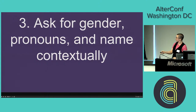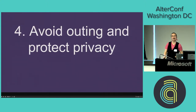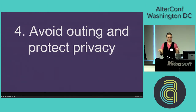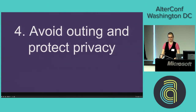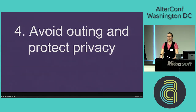That brings me to step four: avoid outing and protect privacy. Honestly evaluate the privacy that your systems can offer — both technological and human systems, and the processes you have in place around data. Be transparent with your users about their expectation of privacy. Only take data that you actually need, which can be hard in a data-driven society. But an optional field has never actually killed anyone — they're okay.